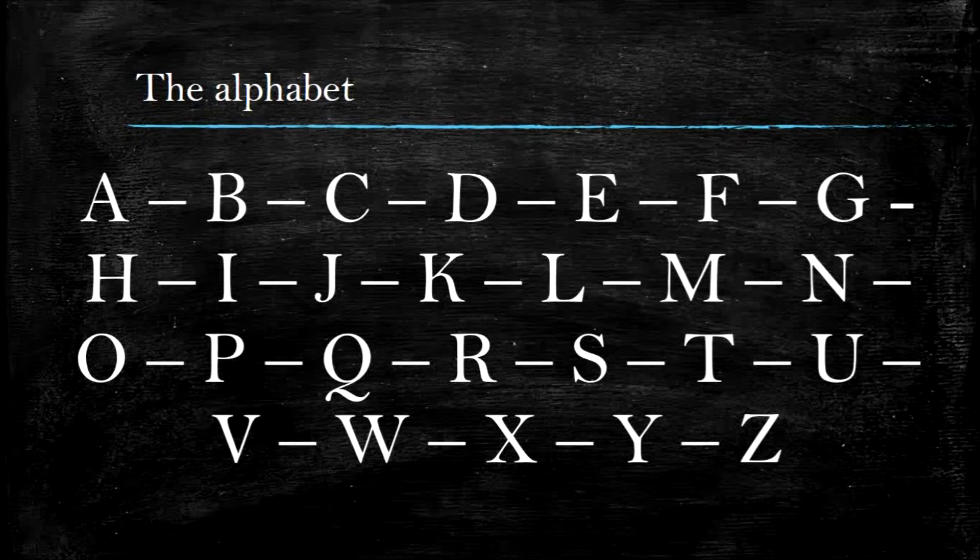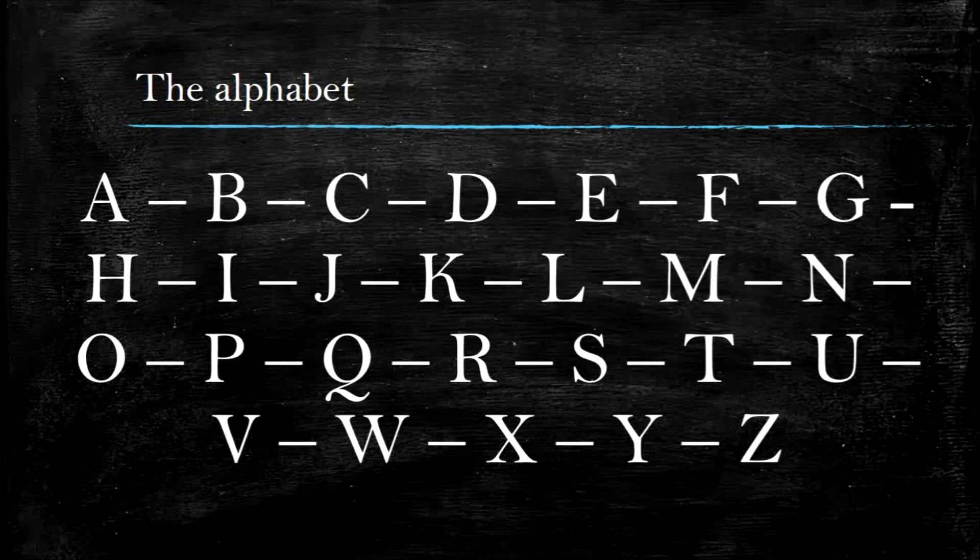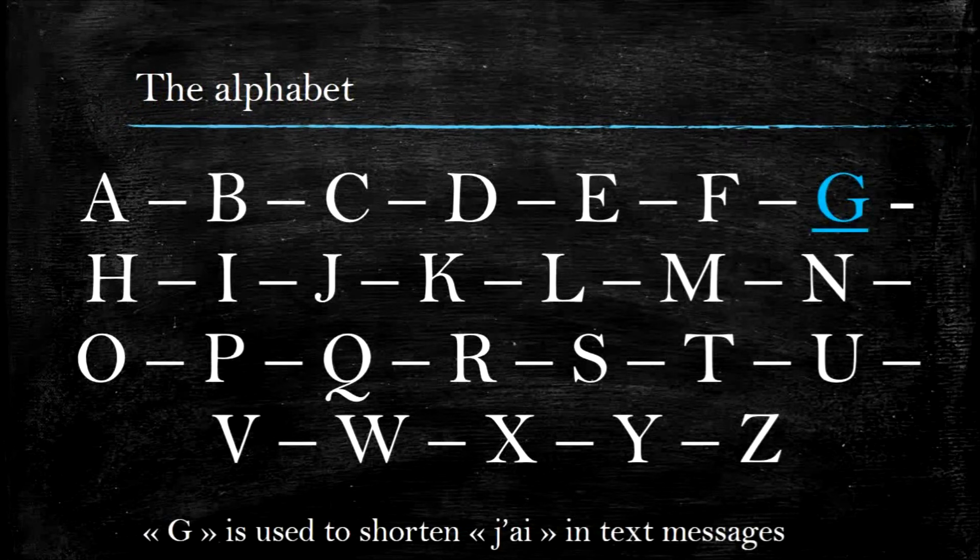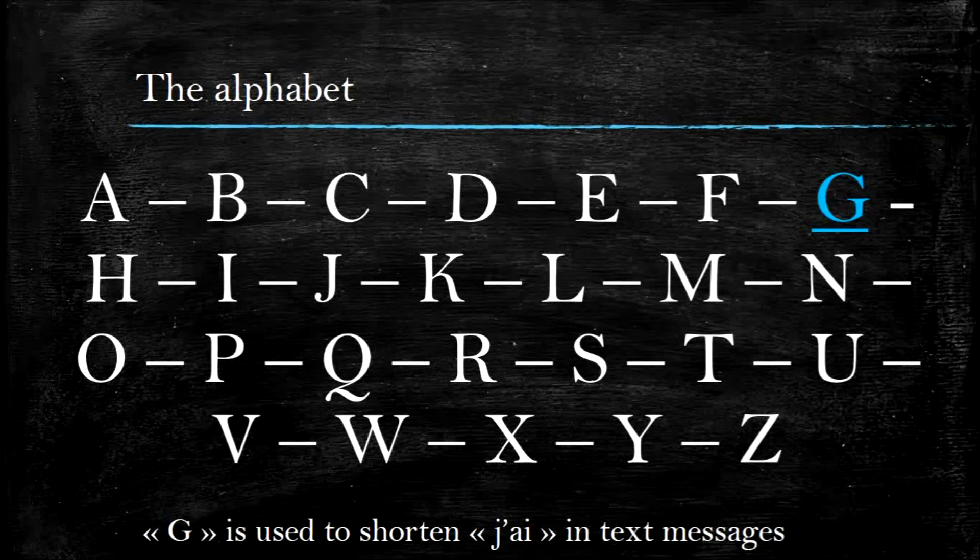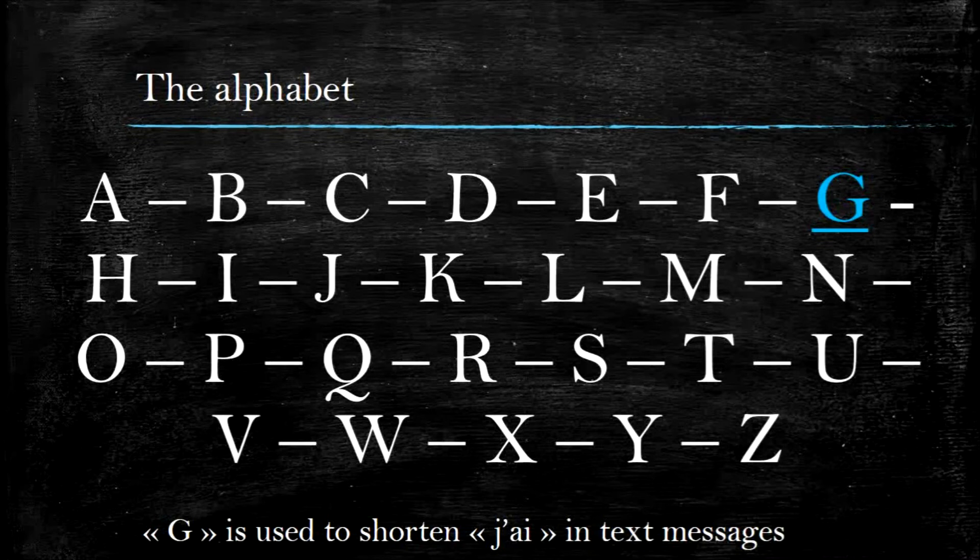About five or six letters are pronounced like in English. I'd like to highlight the difficulties of some letters of the French alphabet. Letter G sounds like the J part of Jay-Z. It is super confusing to English speakers because the French G sounds like the English J.